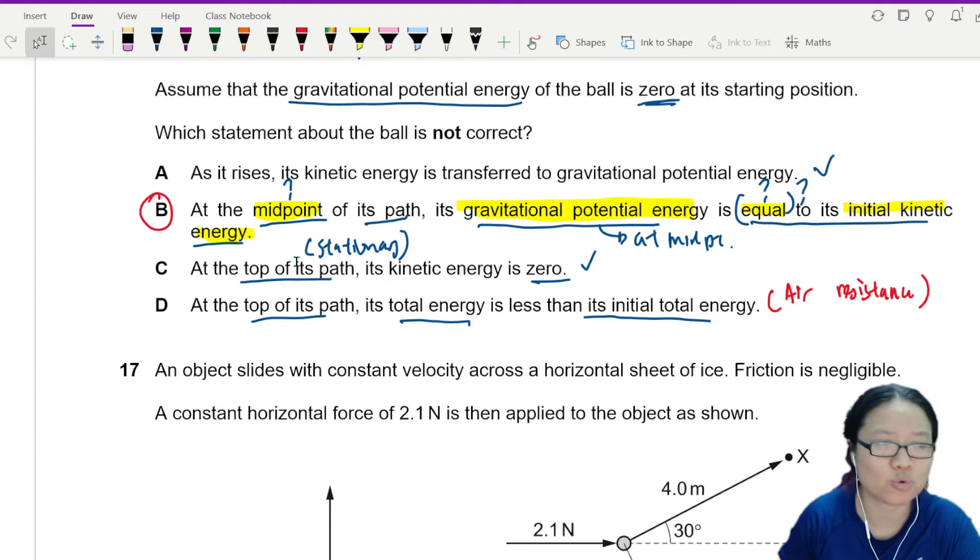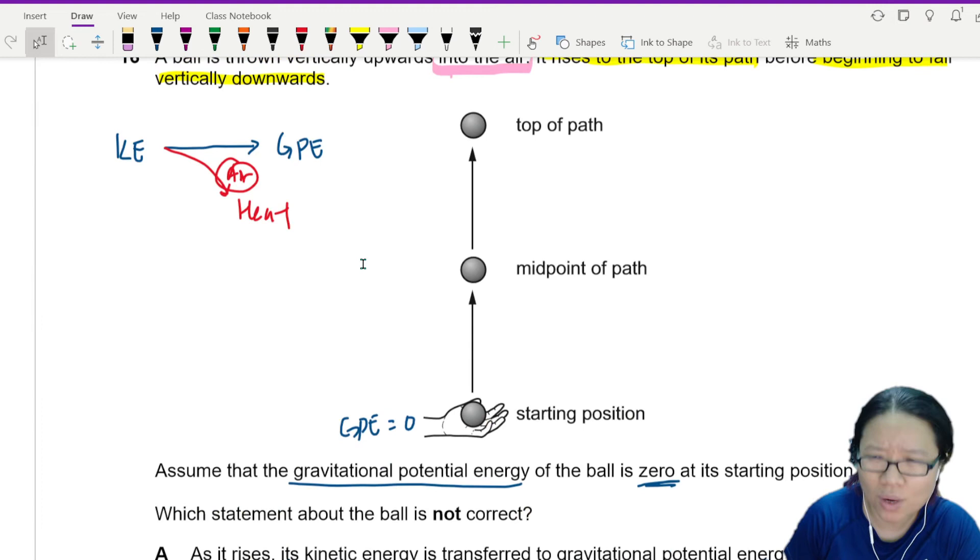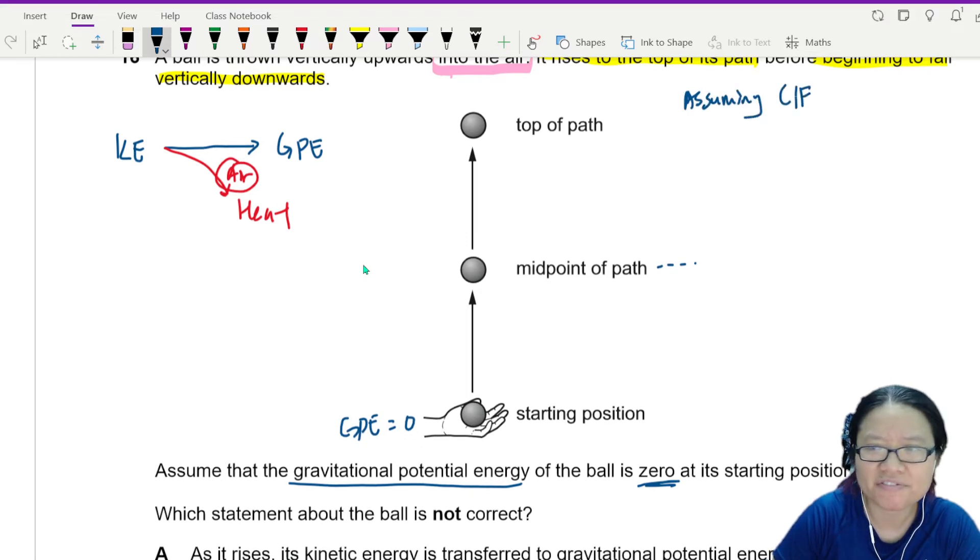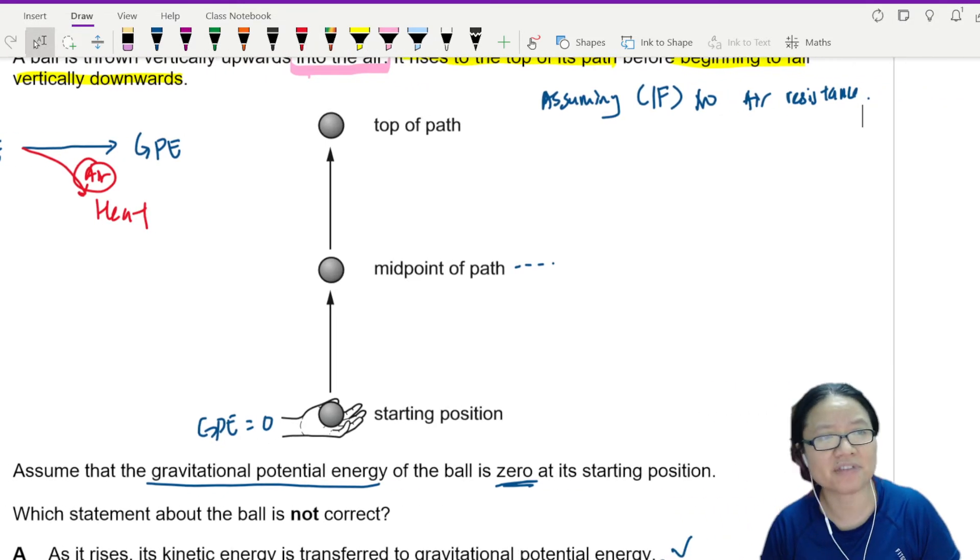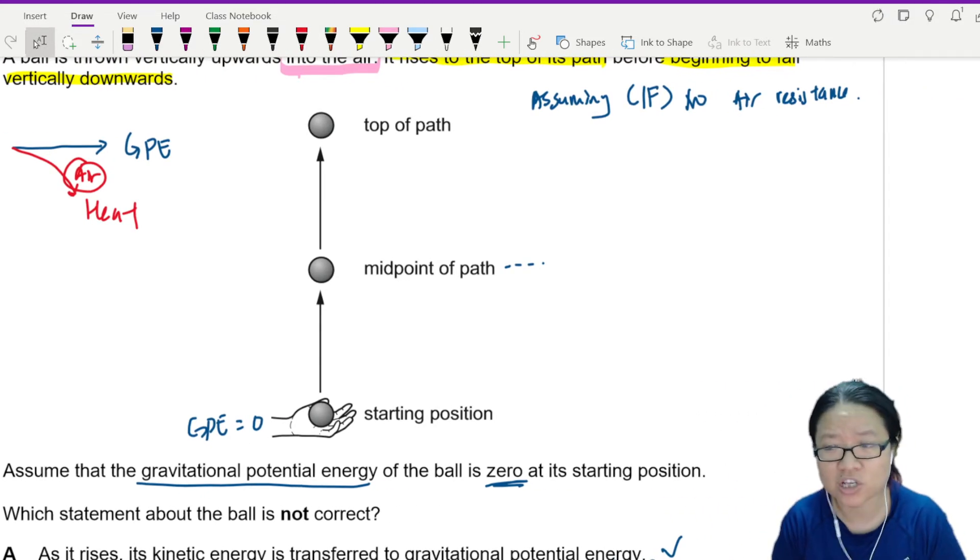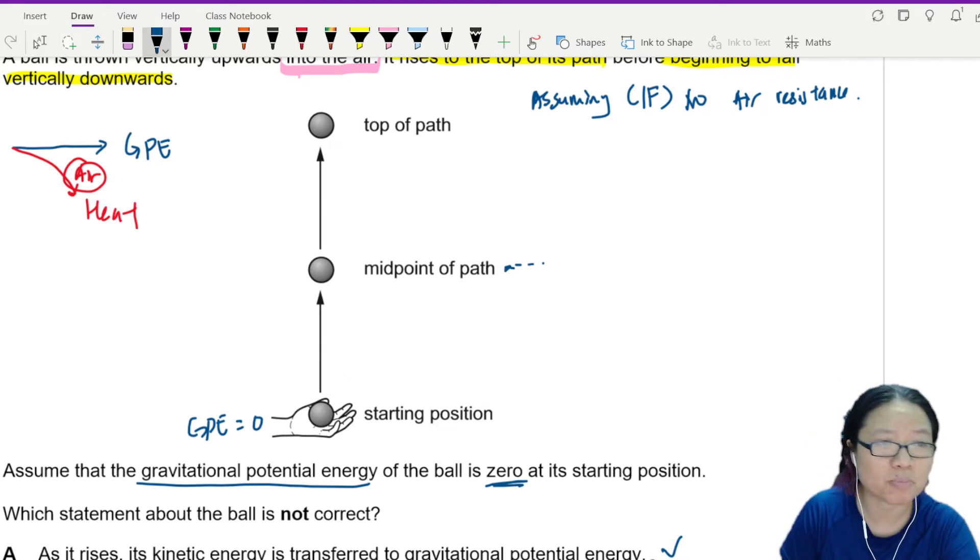But if there is no air resistance, I want to know what the kinetic energy and the potential energy is at midpoint. So let's assume, big if, no air resistance. We have already answered the question. We're just doing a bit of discovery, sidetrack, side quest to see if there's no air resistance, what is the ratio of KE to GPE at the midpoint of the path?